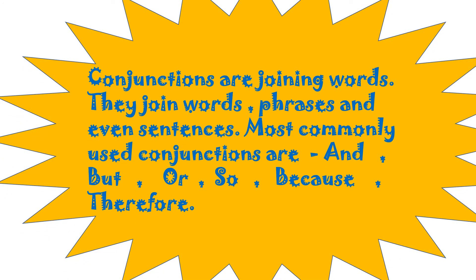Conjunctions are joining words. They join words — two words in a sentence like Tom and Jerry, Ravi and Sunita, tea and coffee. When two words are there in a sentence, they join and connect those two words. They also join phrases, which are groups of words, and even two sentences.